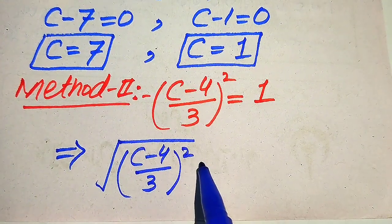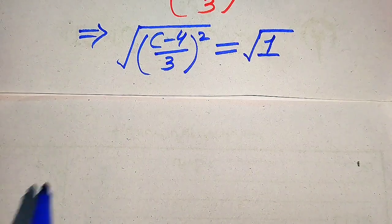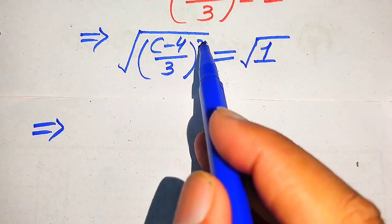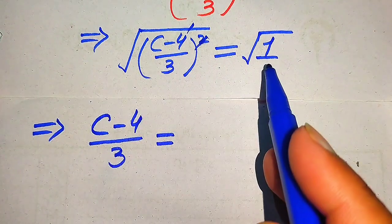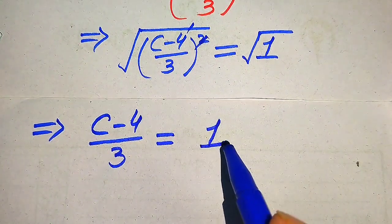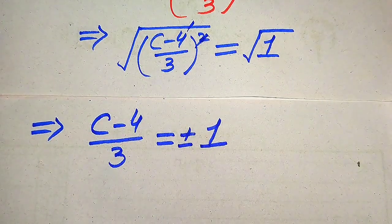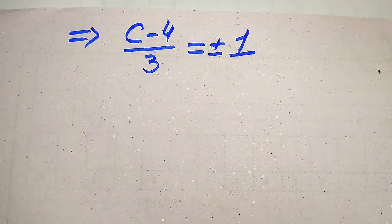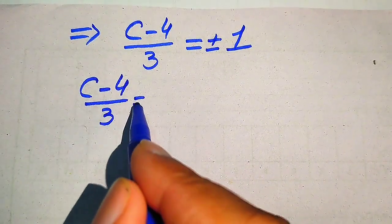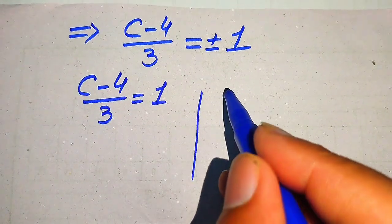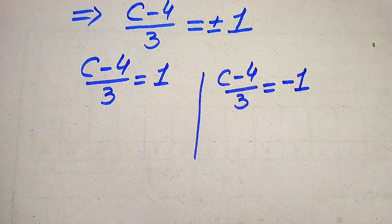When we apply the square root on both sides, the square and square root cancel, giving us (C minus 4) over 3 equals the square root of 1. Since the square root of 1 is 1, and applying square root introduces a plus-or-minus sign, we write plus-or-minus on the right hand side. We break this into two cases: positive 1 and negative 1.